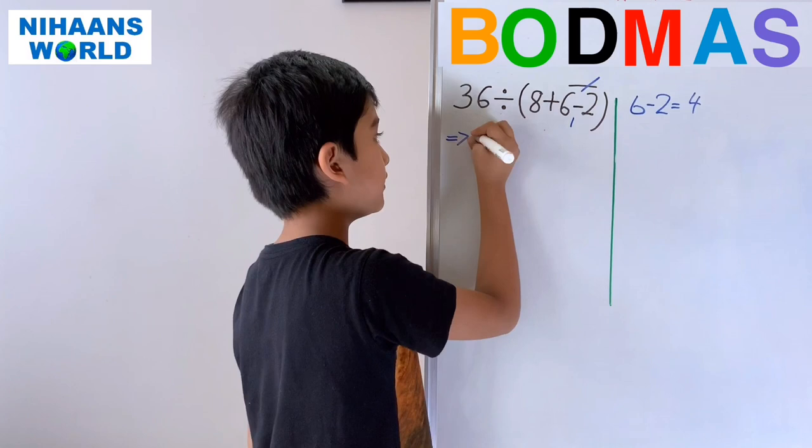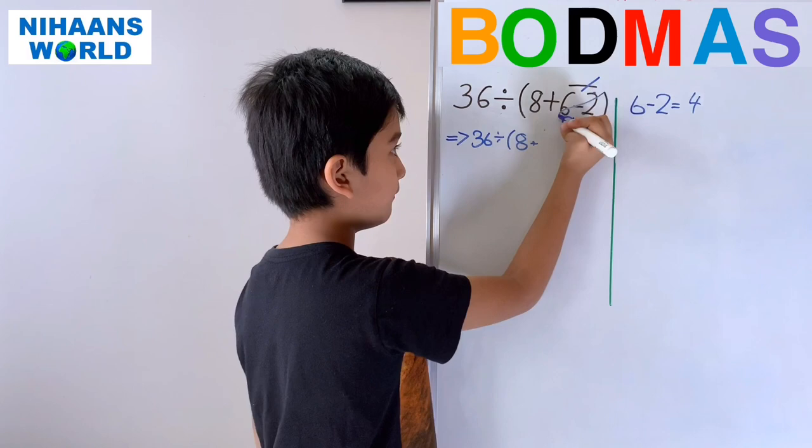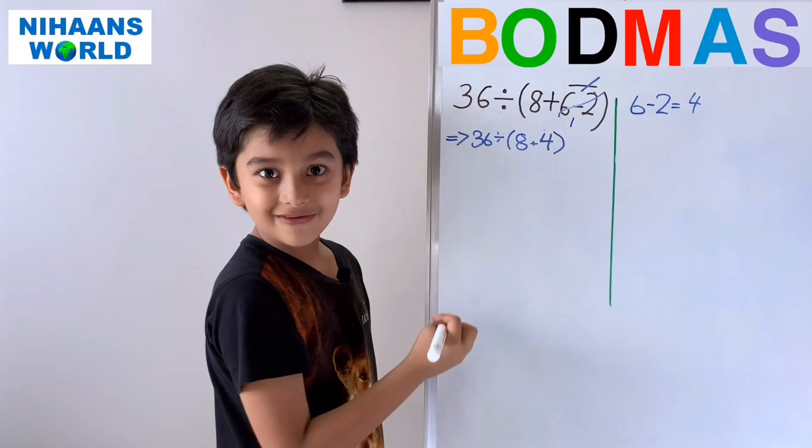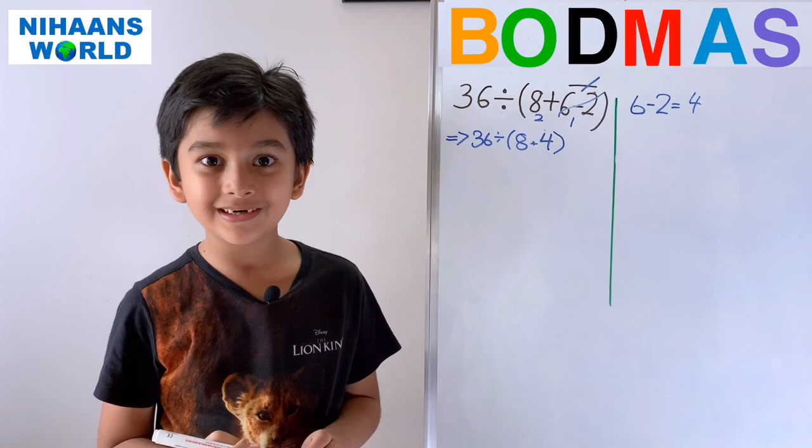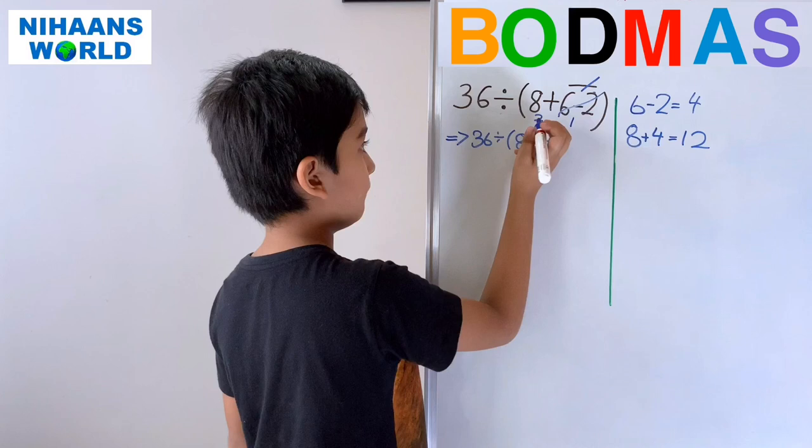Now, 36 divided by bracket 8 plus... so 6 minus 2 will go, now 4 will come. Then bracket. So now, what do we have to do? Bracket one. Now, what is 8 plus 4? It is 12. Now we have done this also.